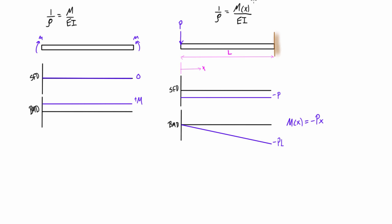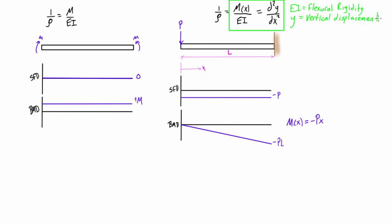It also turns out that 1 over rho — 1 over the radius of curvature — also happens to equal the second derivative of y, so d²y/dx². Let's define the terms here, because this is the basis for all of these problems. EI is the flexural rigidity. The second derivative of y represents the curvature, and y is basically the vertical displacement of the loaded structure from its undeformed position. The intermediate step, dy/dx, is just the first derivative of y, which is the slope, and using the small angle approximation we can call that theta.